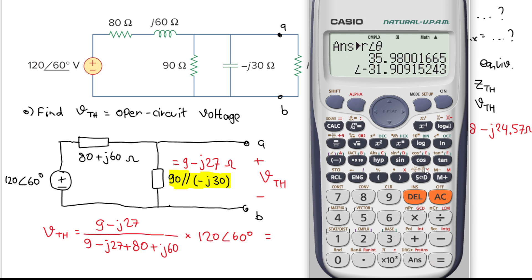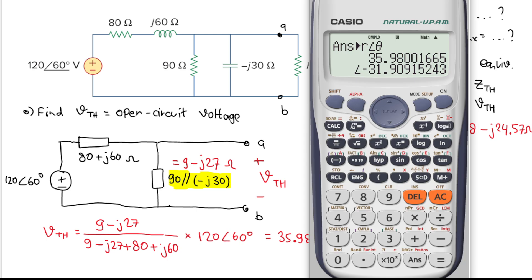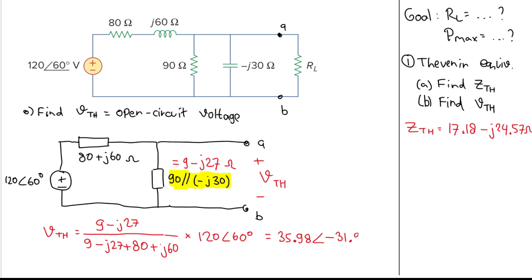Converting to polar form, we get 35.98 with an angle of -31.91°. So Vth = 35.98∠-31.91° V.